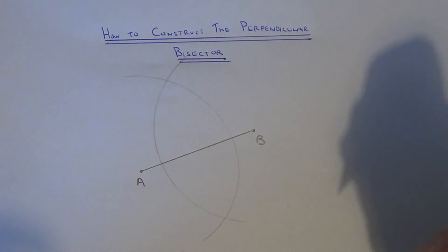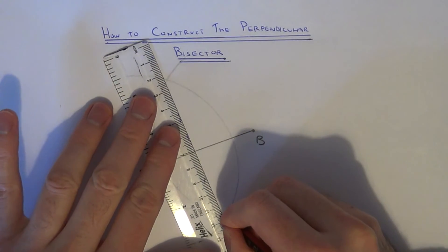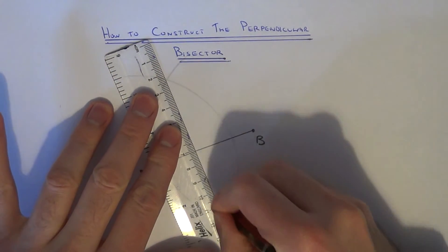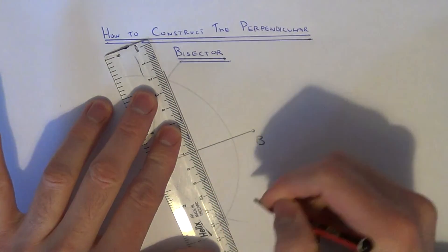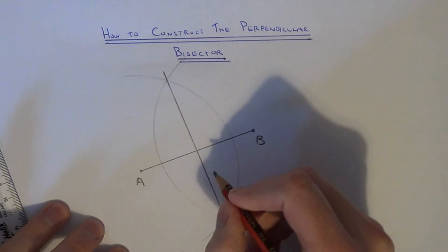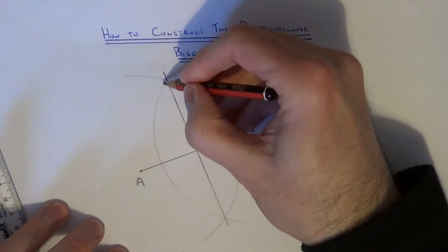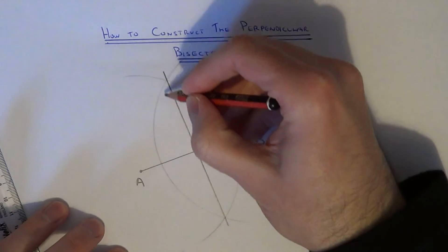Finally, join up the two intersection points and this line here is the perpendicular bisector.